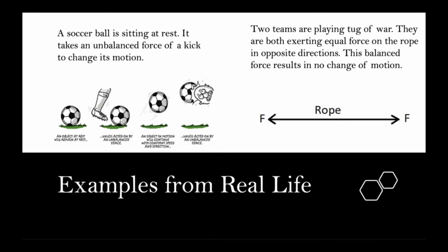Examples from real life: a soccer ball is sitting at rest — it takes an unbalanced force of a kick to change its motion. Two teams are playing tug of war; they are both exerting equal force on the rope in opposite directions, and this balanced force results in no change in motion.